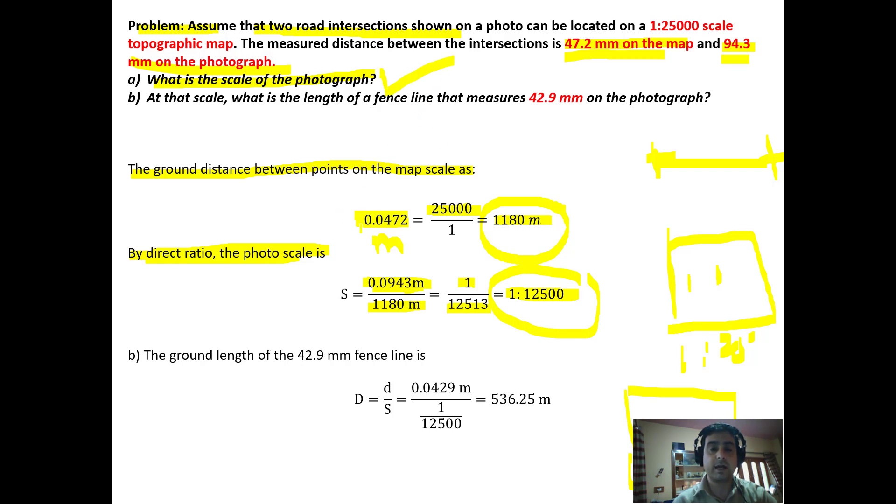The second part asks: at that scale, what is the length of a fence line that measures 42.9 mm on the photograph? On the photograph there is a fence line which is 42.9 mm or 0.0429 meters. We have to estimate the length of the fence in meters on the ground. We know that D equals D upon S, so ground distance equals distance on photo divided by scale. This ultimately comes out to be 536.25 meters.